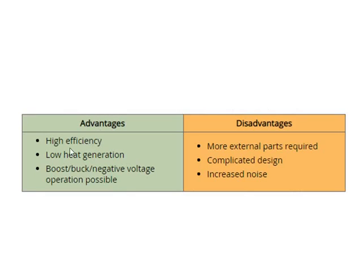The advantages of the switching voltage regulator are: high efficiency, low heat generation because no power is dissipated across the switching element, and compact size. The disadvantages include: more external parts are required, the design is very complicated, and switching noise increases because of the high-frequency switching.